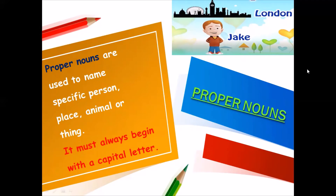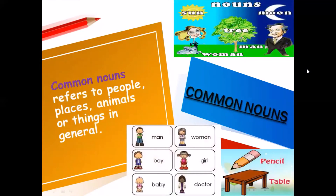Now we will see what are common nouns. Common nouns refer to people, places, animals, or things in general. For example: book, table, pen, pencil, men, women, tree, dog, etc.